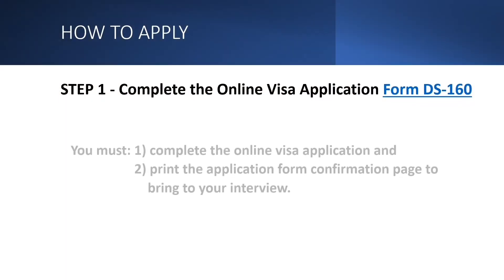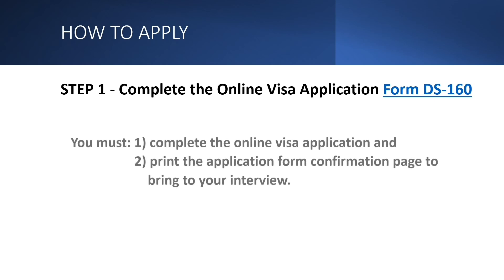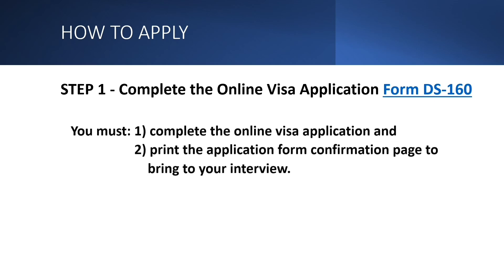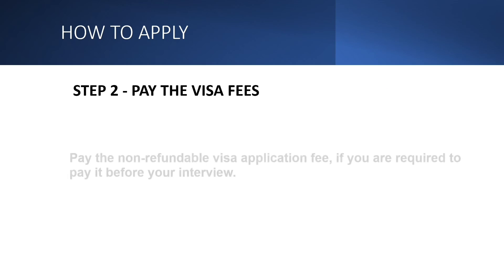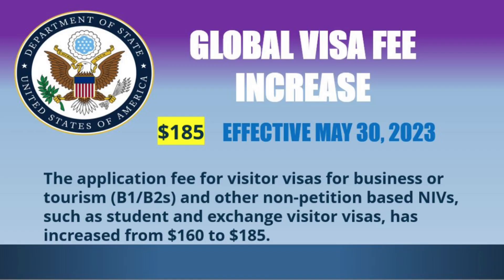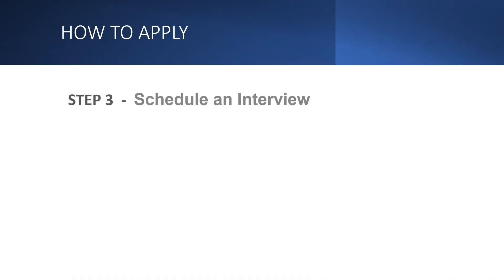Here are the steps on how to apply for a tourist visa. Step one: complete the online visa application form DS-160 and print the confirmation page to bring to your interview. Step two: pay the visa fee — effective May 30, 2023, the amount is $185 USD. Note that the fee is non-refundable.